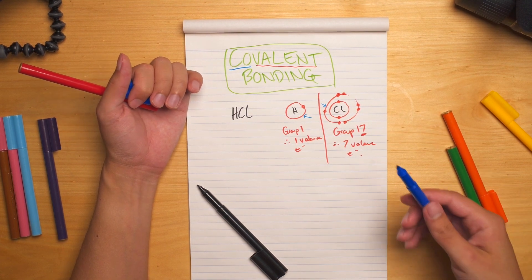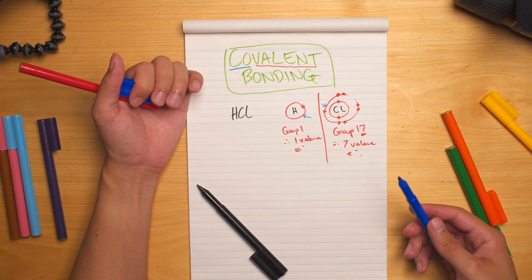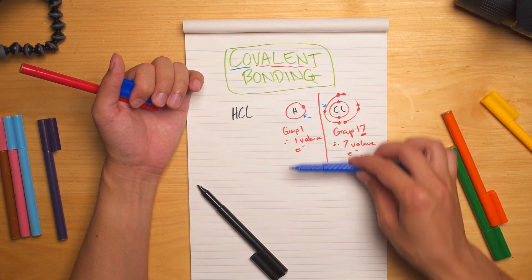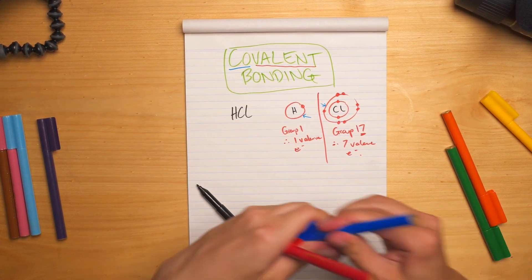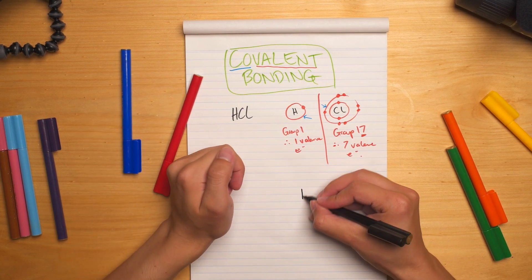And when they've overlapped, they now have shared access to their lone electrons. And once they share, so if Chlorine shares its lone electron to Hydrogen, and Hydrogen shares its lone electron to Chlorine, then they form a covalent bond and they have access to the electrons that they need.